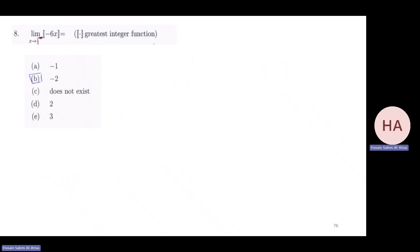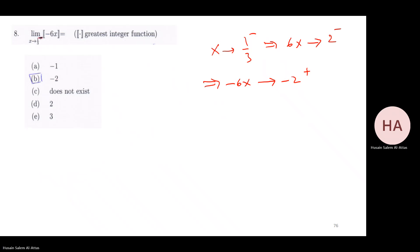Greatest integer problem: if x goes to one-third from the left, then six x goes to two from the left. Multiplying by six means six x goes to two from the left, which implies minus six x goes to minus two from the right. Minus two from the right means minus 1.9-something, so the greatest integer of minus six x is minus two. So the answer is minus two.